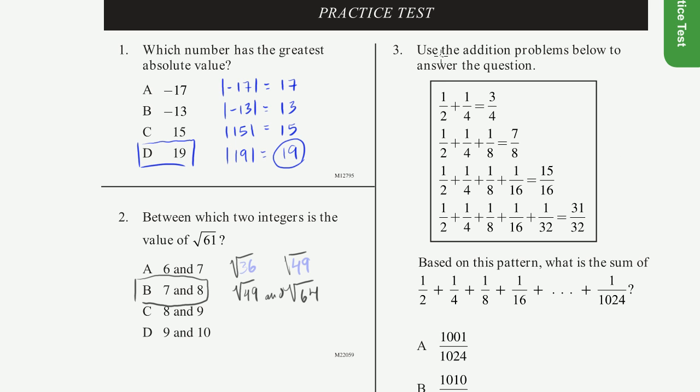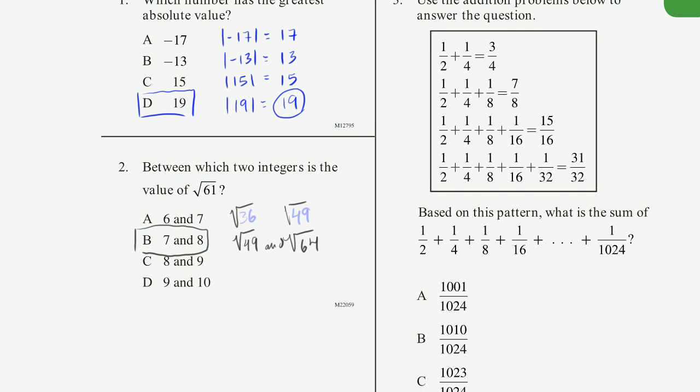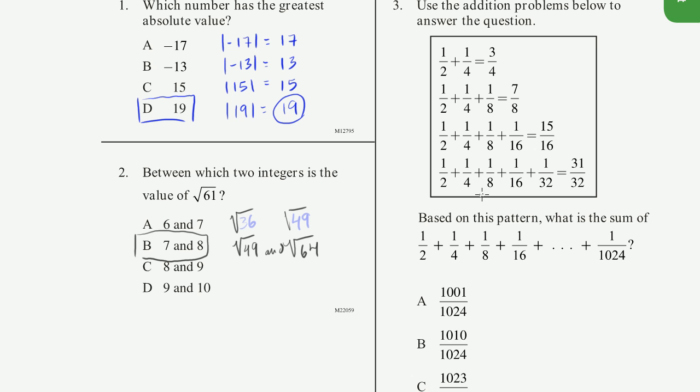Next problem, number three. Use the addition problems below to answer the question. All right, so they wrote some addition problems right there. We're dealing with fractions. Let's see where this goes. Based on this pattern, what is the sum of 1/2 plus 1/4 plus 1/8 plus 1/16, all the way to 1 over 1024. So let's see if we can discern some type of a pattern here.